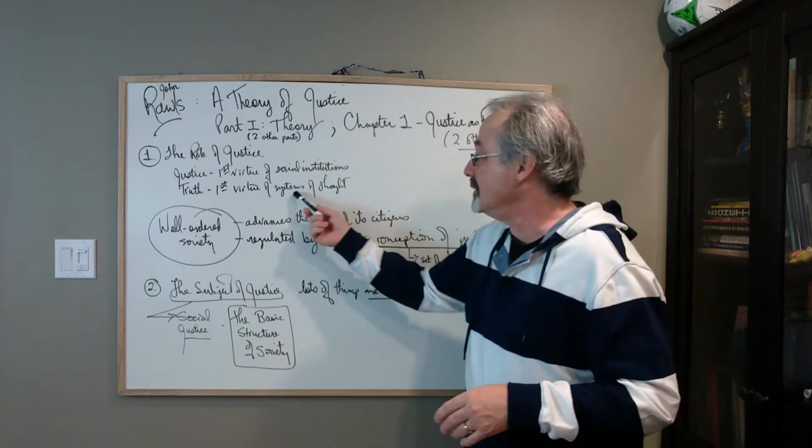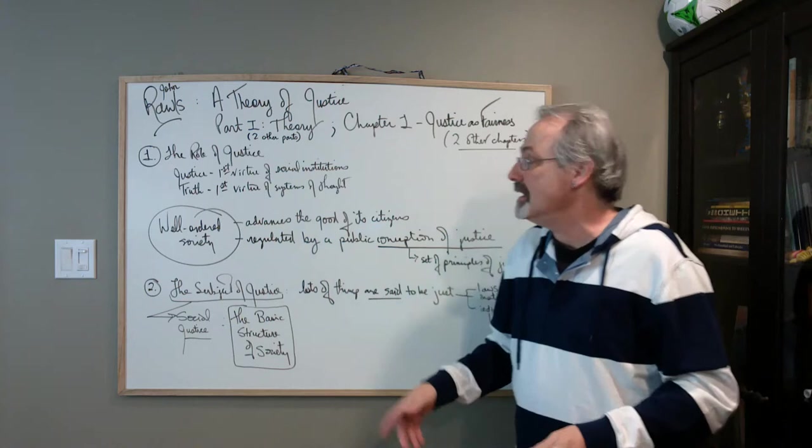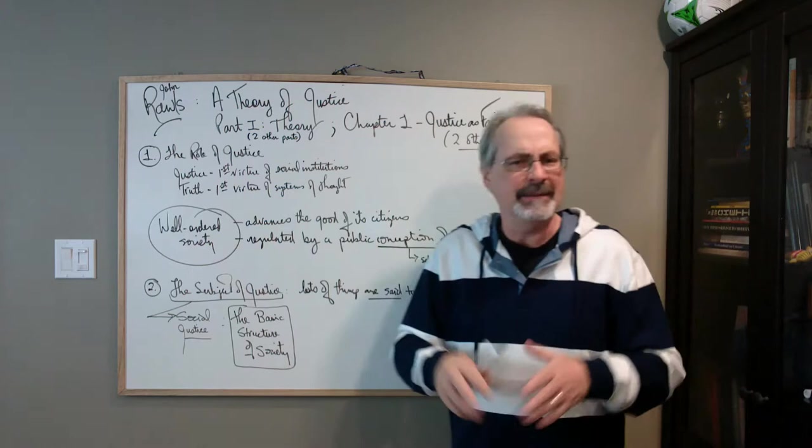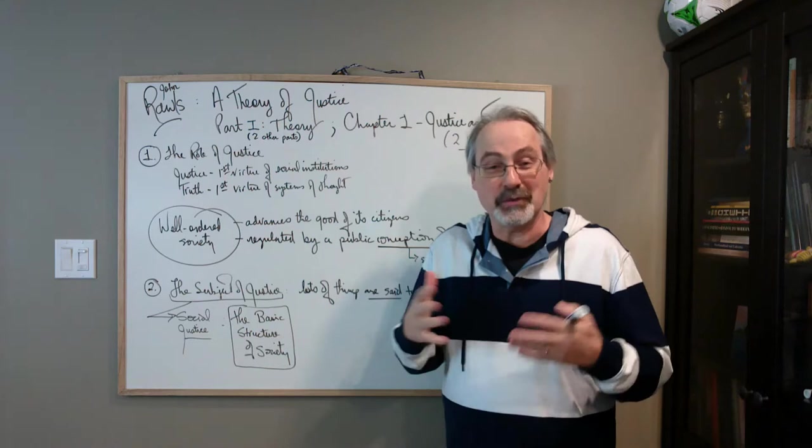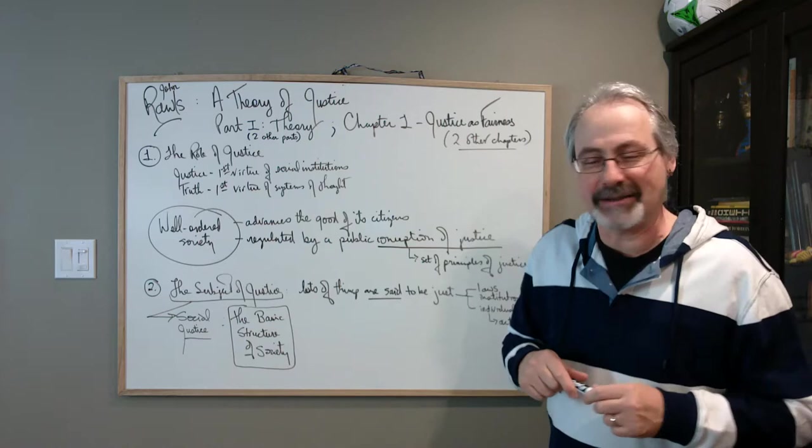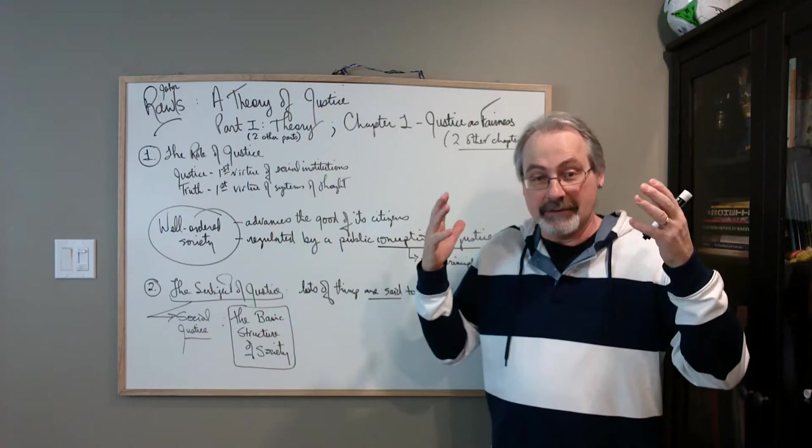The same thing Rawls thinks holds for systems of thought. The first thing they have to be is true, right? So Rawls prioritizes justice over things like coherency in the same way that he thinks systems of thought would prioritize truth over things like coherency. Now, it's a ferociously complicated topic to talk about how truth works in systems of thought. Because some people think that the coherency model of truth is what unpacks the term truth and whatnot. We can leave, fortunately, all of that complexity aside.